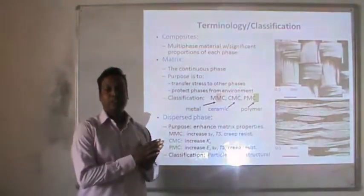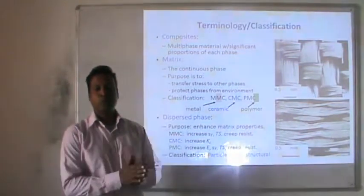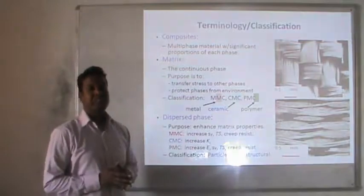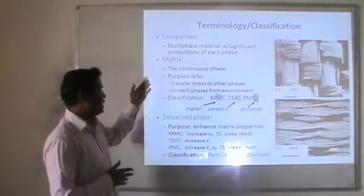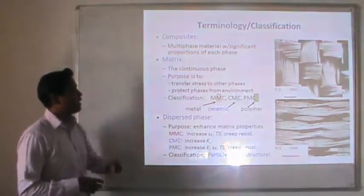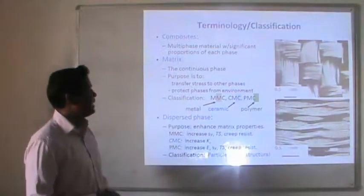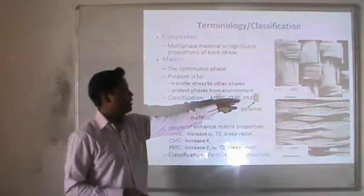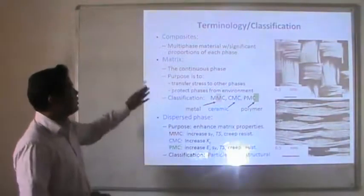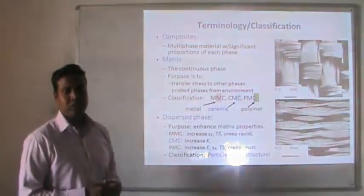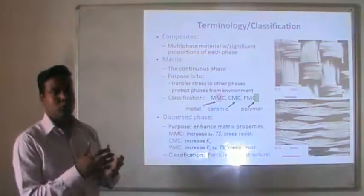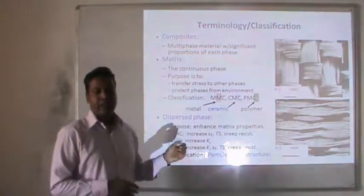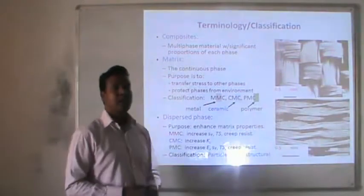The terminology and classification of composite materials: a composite is a multiphase material with significant proportions of each phase. It is generally divided into two parts: the matrix and the dispersed phase. The matrix is classified into metal matrix composite (MMC), ceramic matrix composite, and polymer matrix composite (PMC). The matrix is the continuous phase whose purpose is to transfer stress to the other phase and protect the dispersed phase from the environment. The dispersed phase's purpose is to enhance the matrix properties.